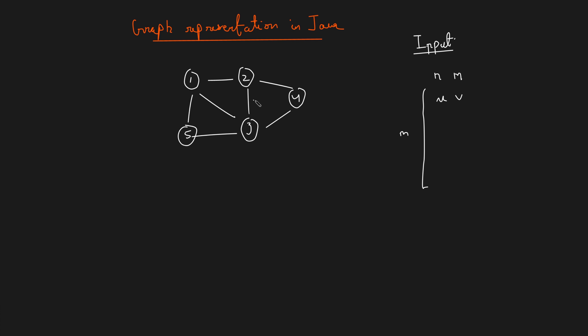Imagine this is the graph. What the problem statement or input statement will state is: you are given an undirected graph. In this undirected graph, they will give you N, which represents the number of nodes. Over here, the number of nodes is 5. Then they will tell you M, which is the number of edges. Over here, if you count the number of edges, it is 7.